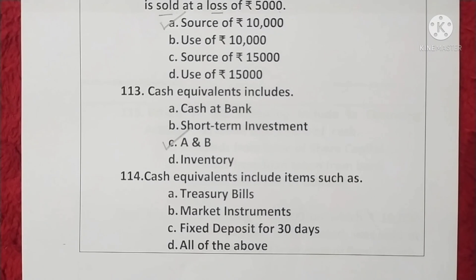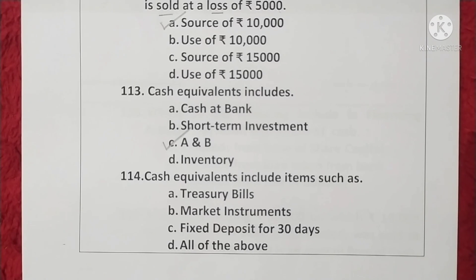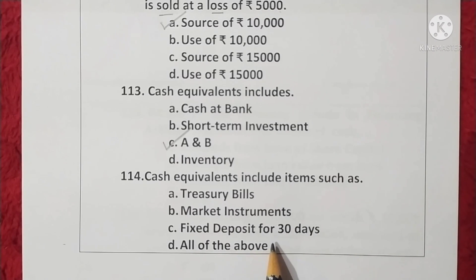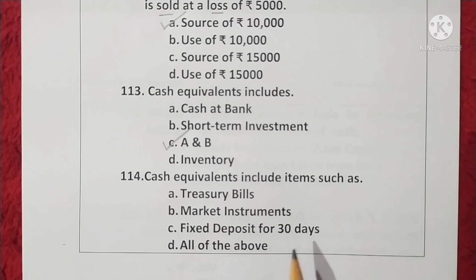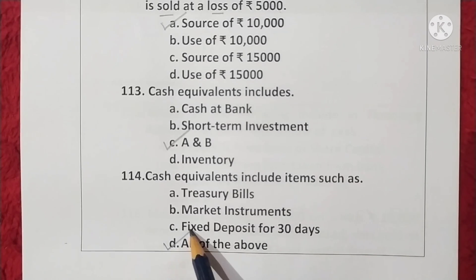Question 114. Cash equivalents include items such as treasury bills, market instruments, and fixed deposits for 30 days. All three are cash equivalents, therefore all of the above is correct. Option D is correct.